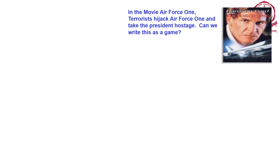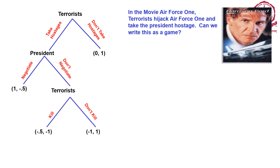Another classic example is based on the movie Air Force One. Terrorists hijack Air Force One and take the president hostage. If terrorists don't take hostage, nothing is gained or lost — assume the president continues to feel safe: payoff 0 comma 0. If terrorists take hostage, the president can negotiate or not negotiate. If they negotiate, terrorists are at an advantageous position — payoff 1 — and the government loses some value: minus 0.5. If the president does not negotiate, terrorists can let him go or kill him. If they kill him, terrorists are at minus 0.5 because of the cost, effort, and subsequent need to hide from police.